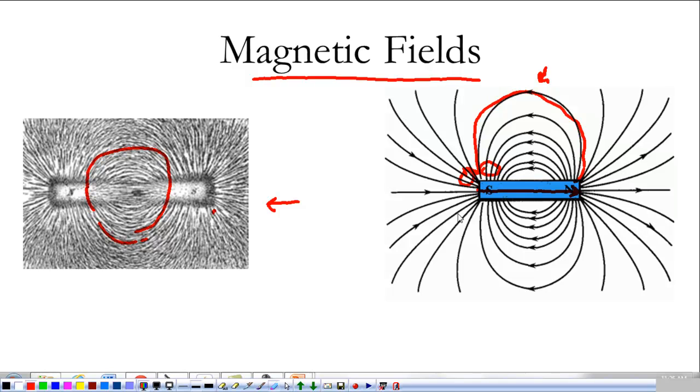You can use a compass to sort of map out what the magnetic field looks like around a magnet. That's what we've done in class. It's a pretty simple concept.